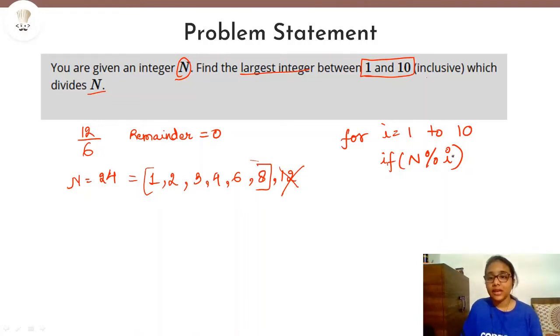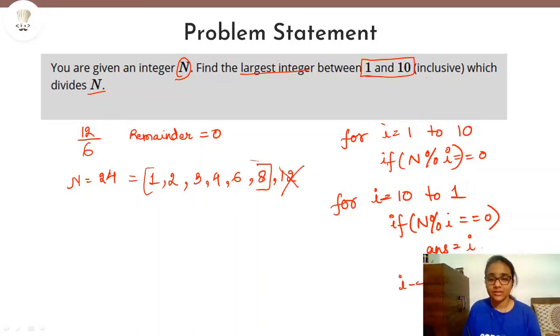And whenever you find out that N modulus i is equals equals 0, that means N is divisible by i, then in that case, you can just end your loop there and print the answer directly. So what we will do here, we will run our loop from i equals to 10 to 1. We will go backwards. And then we will check if N modulus i is equals equals 0. If that is true, then in that case, we have got our answer that is equals to i. And then we can come out of the loop. And each time we will have to do i minus minus because we want to check for each of the numbers from 1 to 10. And if there is no answer, then we already know that 1 is always a factor of every number. So there will always be an answer to this question.